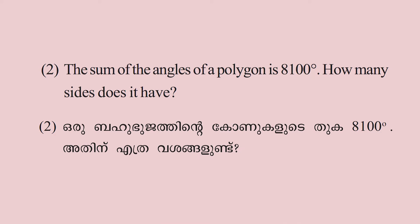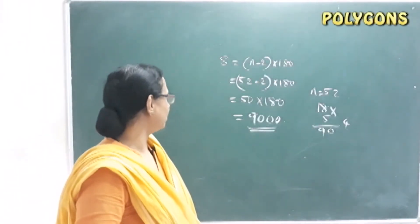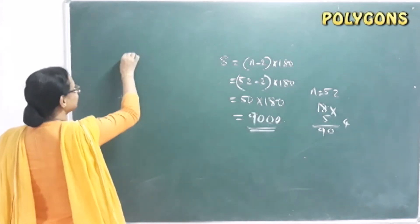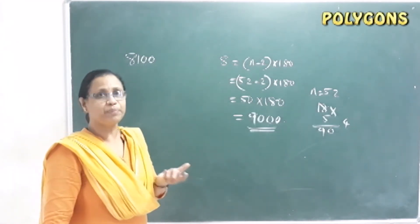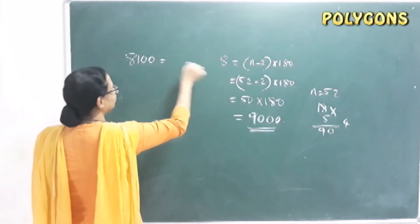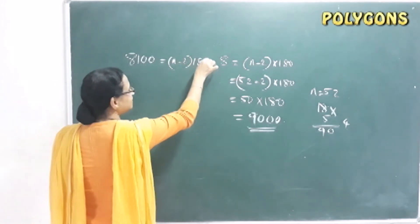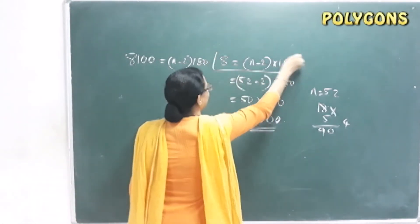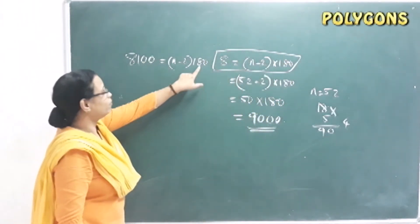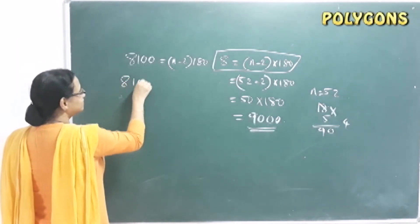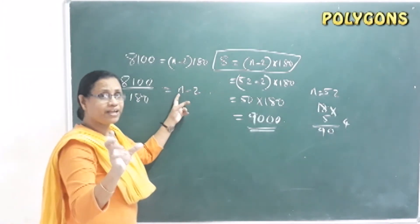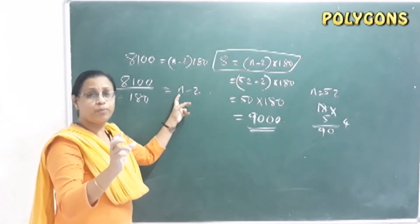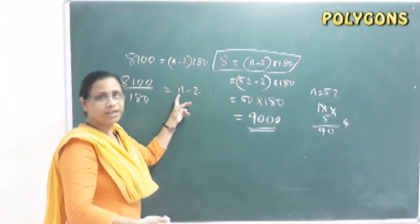Next question: The sum of the angles of a polygon is 8100. How many sides does it have? Using S = (N − 2) × 180, we divide both sides by 180: 8100 ÷ 180 = N − 2. The answer must be a natural number — a positive integer.